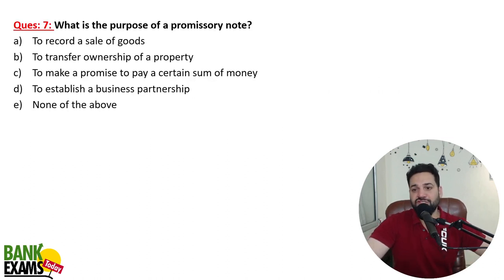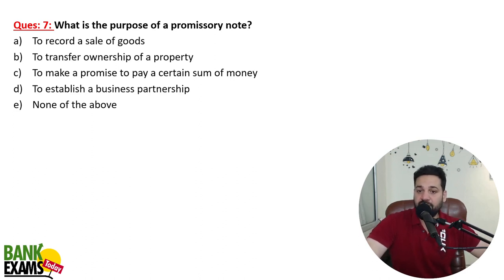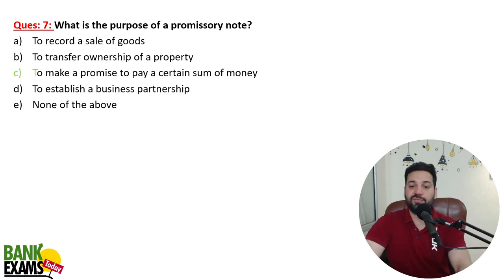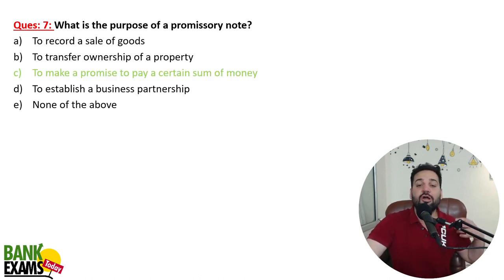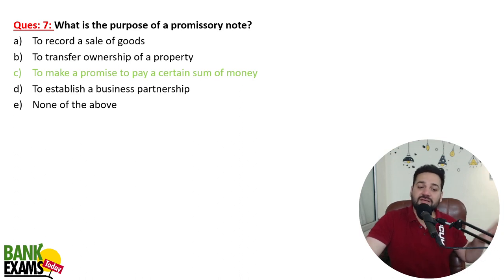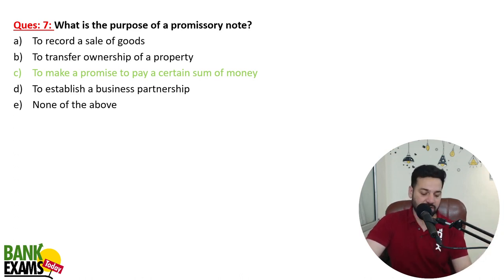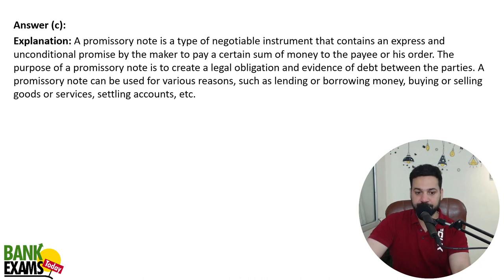What is the purpose of a promissory note? It is not to record the sale of goods, nor to transfer ownership of property. A promissory note is a promise to pay — not an order to pay. It is a promise to pay a certain sum of money. So 'C — it is a promise to pay' is the correct answer.